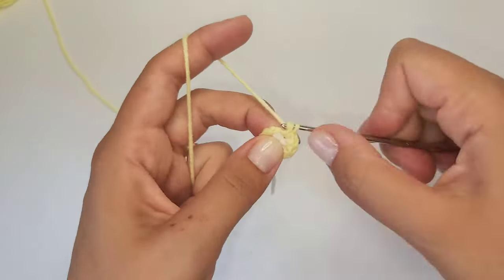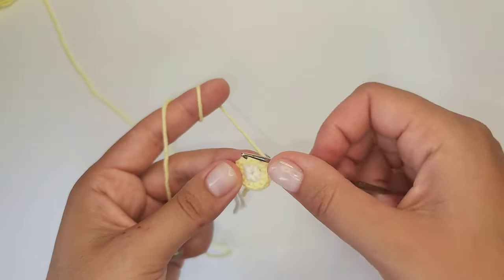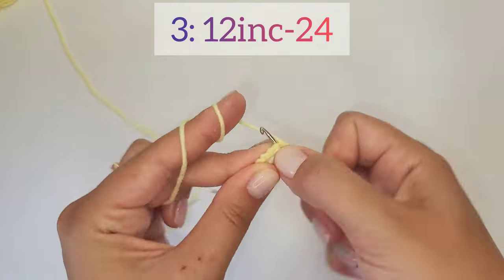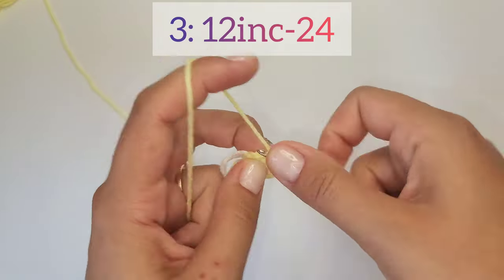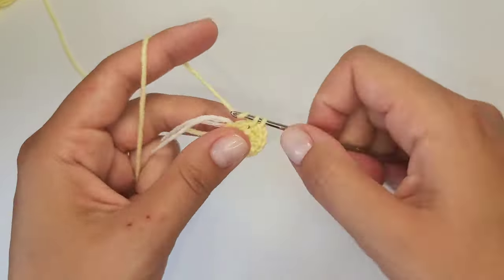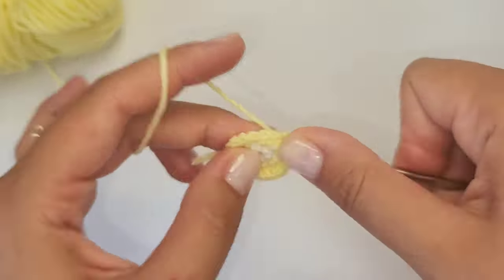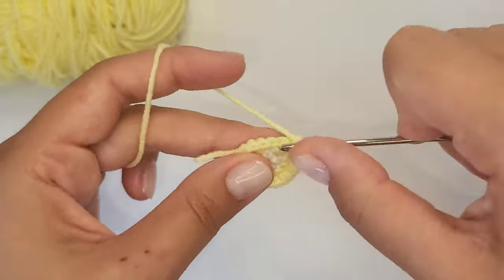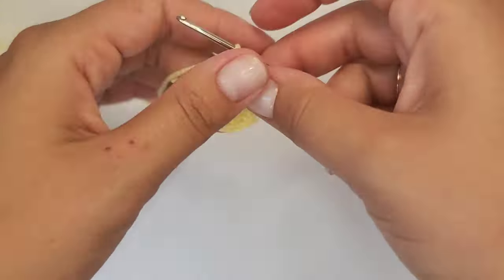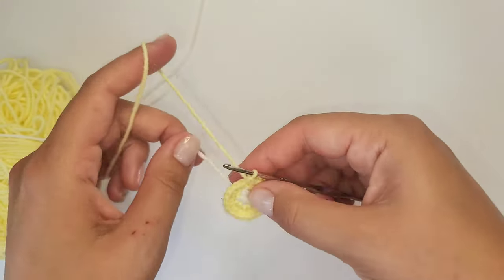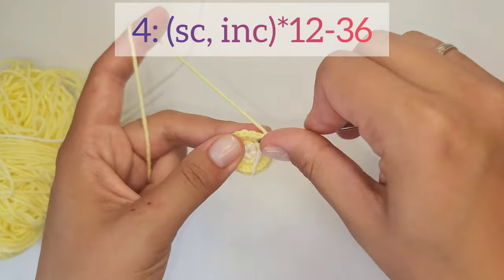The second round is ready and we are going to crochet 2 single crochet stitches in one loop one more round. You should have now 24 stitches in total and we continue to expand the detail.